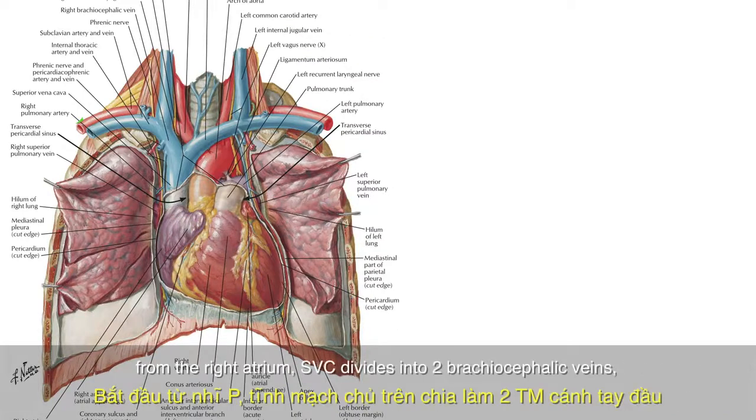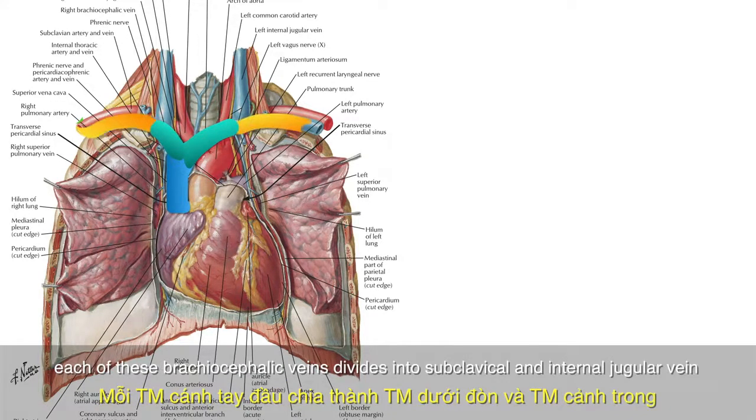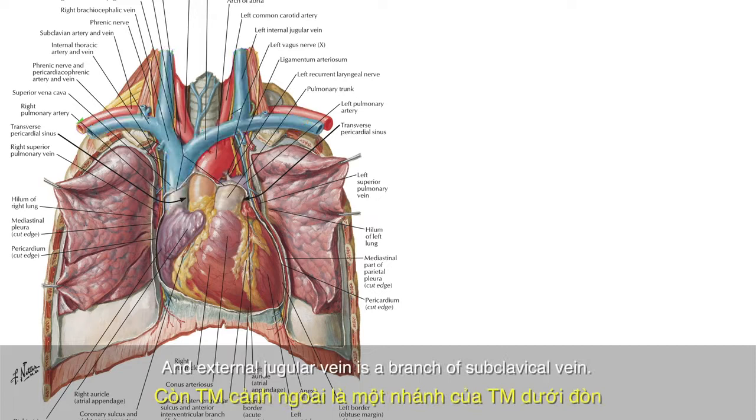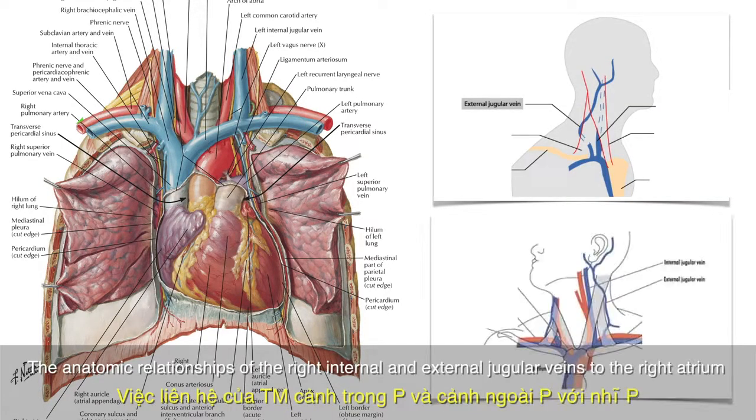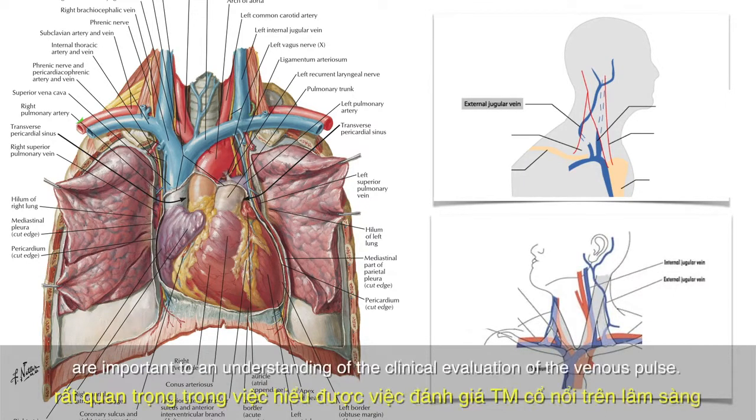From the right atrium, superior vena cava divides into two brachiocephalic veins. Each of these brachiocephalic veins divides into subclavian and internal jugular vein. An external jugular vein is a branch of subclavian. The anatomy relationships of the right internal and external jugular veins to the right atrium are important to an understanding of the clinical evaluation of the venous pulse.